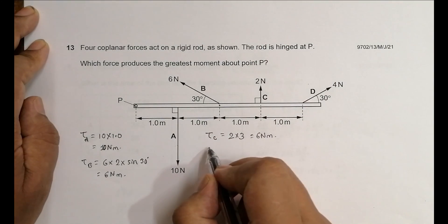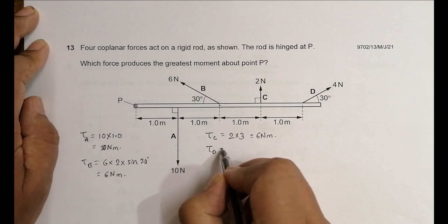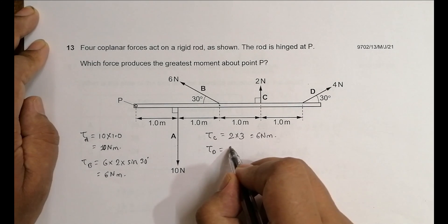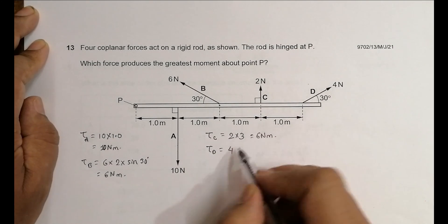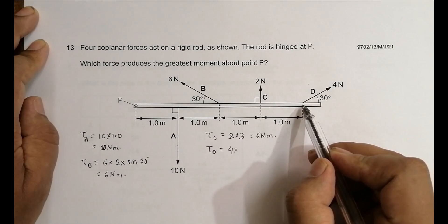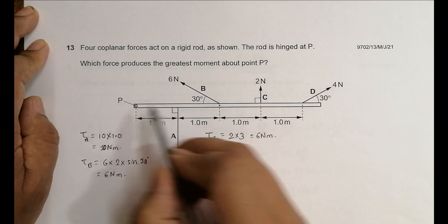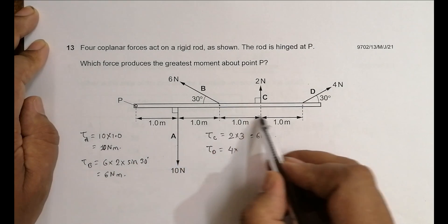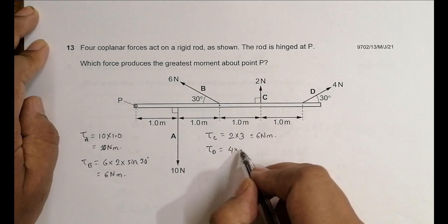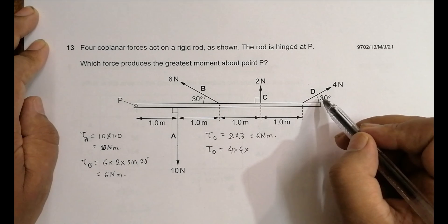So tau D equals the force, the value is 4. 4 into R - R is the distance of point of application of force from the fulcrum. So if I go through this, 1 meter 4 times. It is 4 into sine of the angle between the direction of force, line of force, and direction of this R. It is again 30.